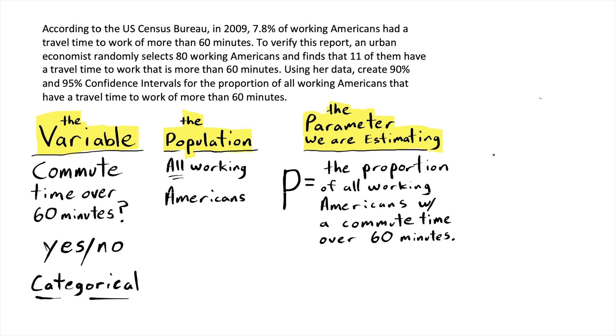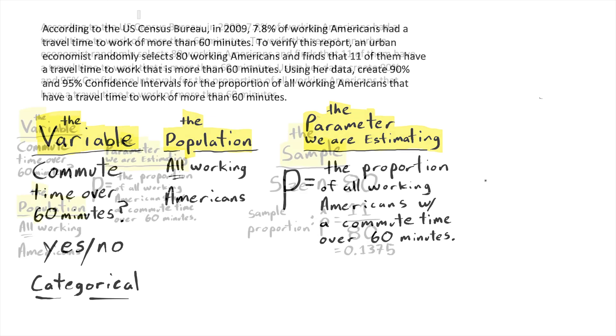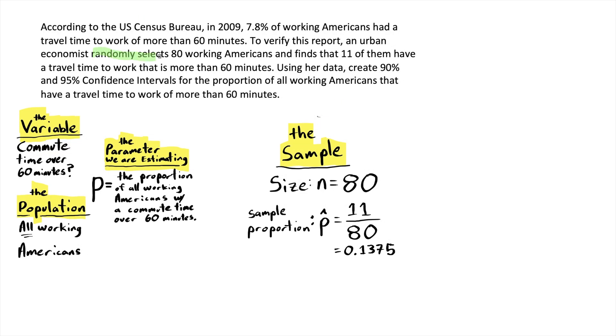Our parameter is the proportion of all working Americans that have a commute time over 60 minutes. The urban economist selected 80 individuals. That's the size of our sample and the symbol we'll be using for that is the letter N. Of that sample, 11 of them had a travel time to work that was more than 60 minutes. The sample proportion is 11 over 80, as a decimal 0.1375.